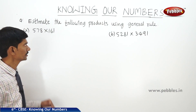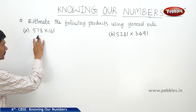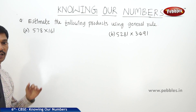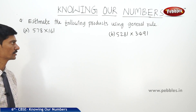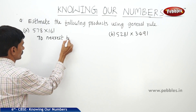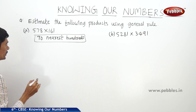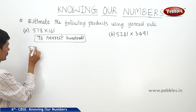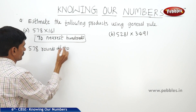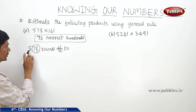Now let us solve the next question: estimate the following products using the general rule. In the first question, the product of 578 and 161. The highest place value in each of the given numbers is hundreds, so these two numbers should be rounded off to the nearest hundreds. So 578 rounds off — up to the tens place it is 78, which is more than 50, so we take 600.